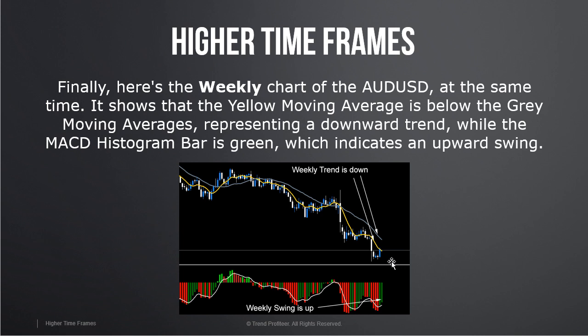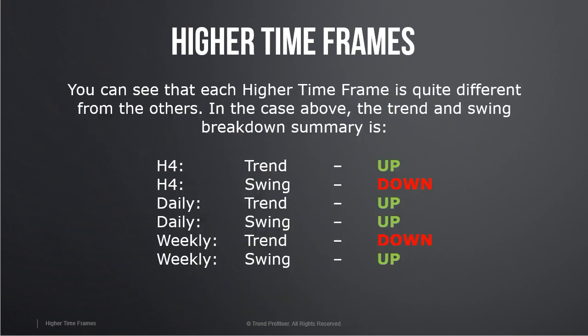Here's the weekly chart of the Aussie. The yellow moving average is below the grey moving average, representing a downward trend, while the MACD histogram bar is green, which indicates an upward swing. So you can see that each higher time frame is quite different from the others.